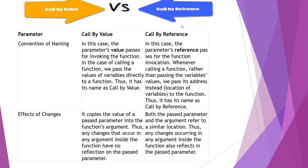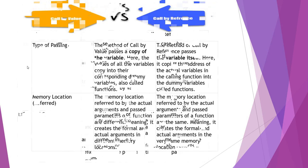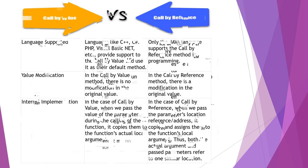Difference between call by value and call by reference. The parameters that we are using here include: convention of their naming, effects of changes, types of passing, memory location, language supported, value of modification, internal implementation.